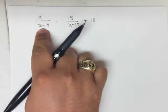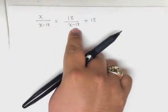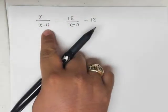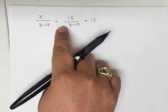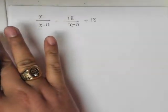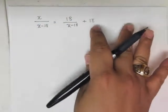So x for sure cannot equal 18, because we only have one denominator in each of these, and the denominator is x minus 18. So if x equals 18, that's not a solution.